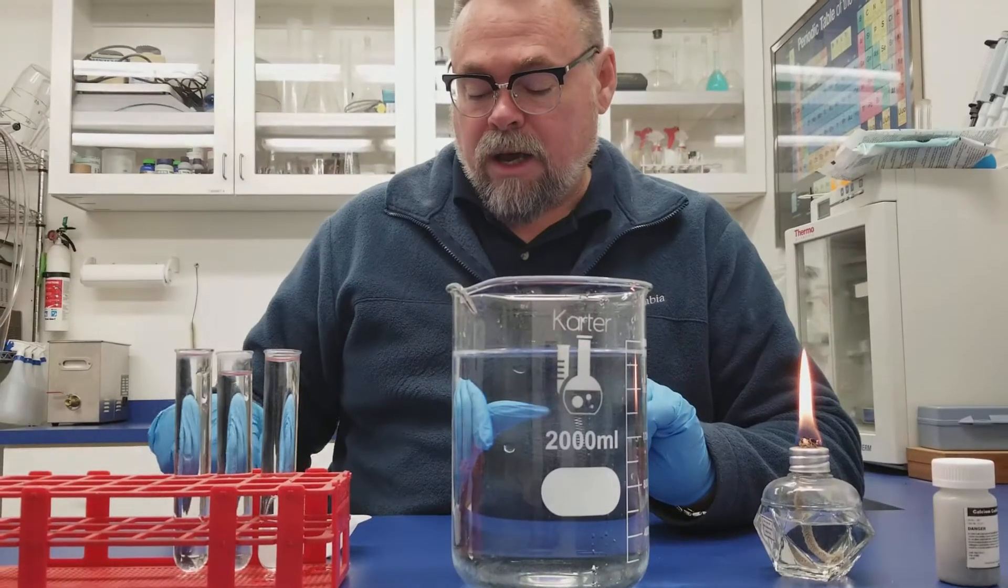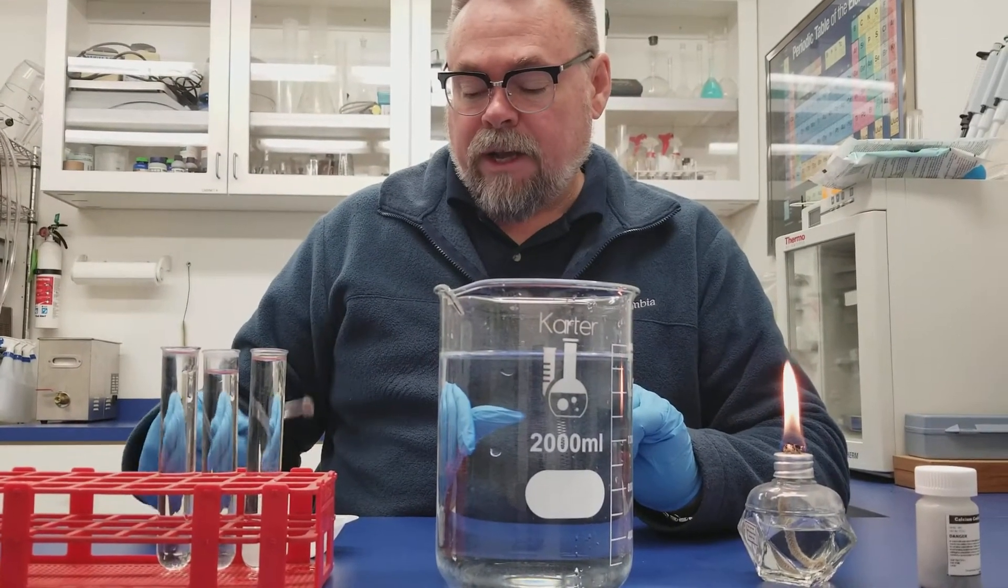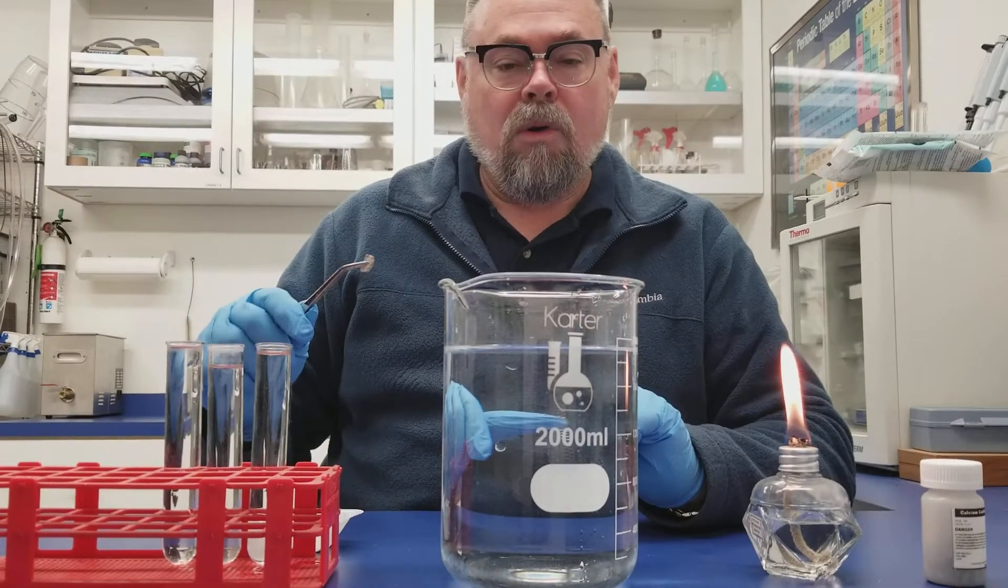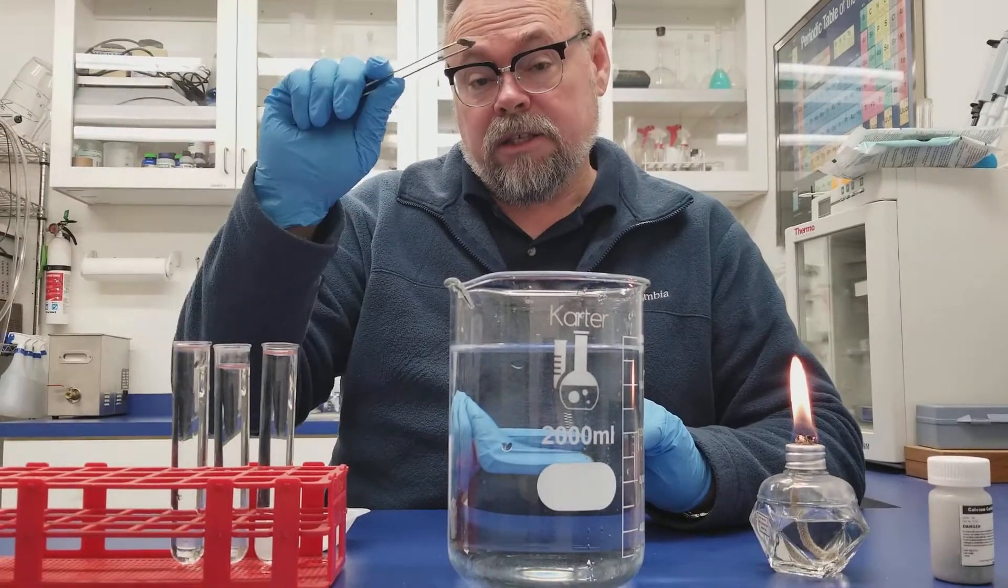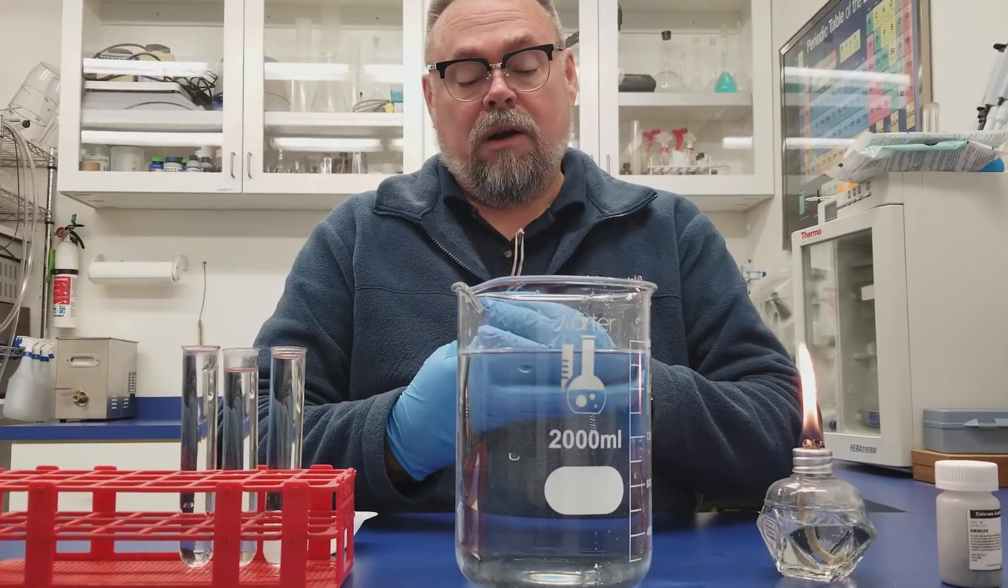Calcium carbide lamps were used back at the turn of last century, century before last, but we don't use them anymore. They used to use it to make acetylene, because this does make acetylene gas when it's dropped into water.